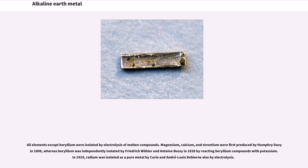All elements except beryllium were isolated by electrolysis of molten compounds. Magnesium, calcium, and strontium were first produced by Humphrey Davy in 1808, whereas beryllium was independently isolated by Friedrich Wöhler and Antoine Bussy in 1828 by reacting beryllium compounds with potassium. In 1910, radium was isolated as a pure metal by Curie and André-Louis Debierne, also by electrolysis.